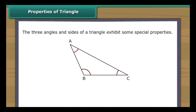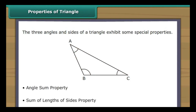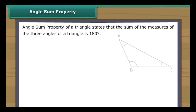The three angles and sides of a triangle exhibit some special properties: the angle sum property and the sum of lengths of sides property. The angle sum property of a triangle states that the sum of the measures of the three angles of a triangle is 180 degrees.